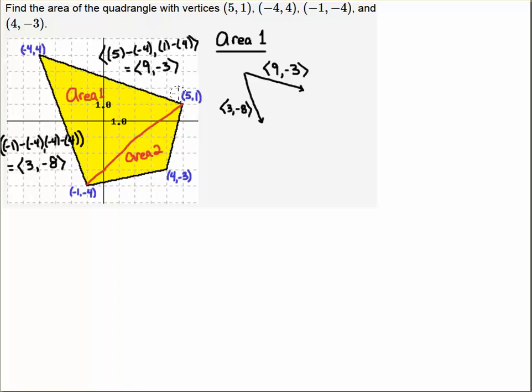Similarly, if I take (5,1) as the head and (-4,4) as the tail, then head minus tail gives us (9,-3), and I worked out the details here. So now that I have these two vectors, I can convert this figure into a parallelogram, and then I realize the Area 1 that I really want to get at is half the area of this parallelogram, but I can easily find the area of this parallelogram using a determinant.